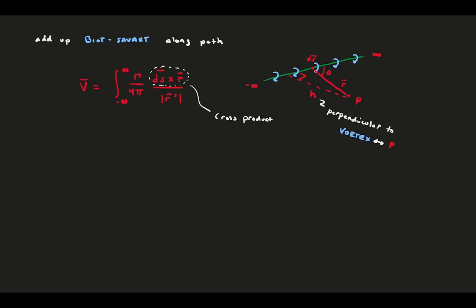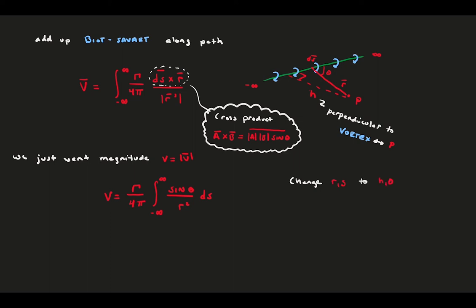Back to the equation, we will make two simplifications. The definition of a cross product between two vectors is applied. And we note that we only care about the magnitude of the velocity induced. This simplifies our equation slightly. Let's bring up our angle diagram. Our goal is to change the r and s into h and theta. For that, we apply trigonometry. This lets us define the r, s, and ds as a function of theta and h.